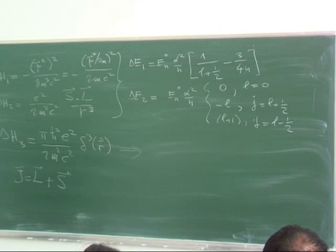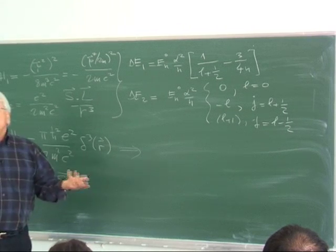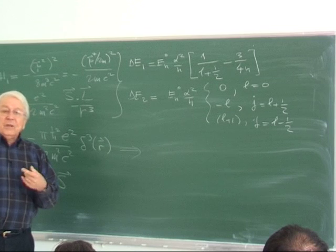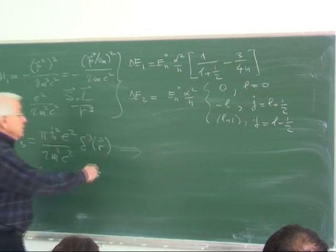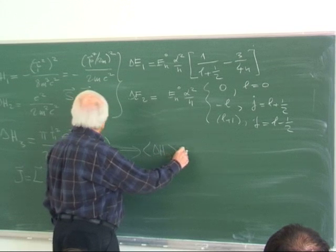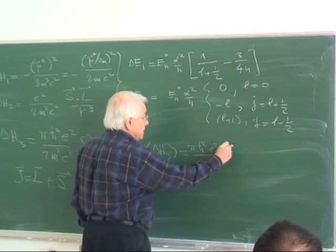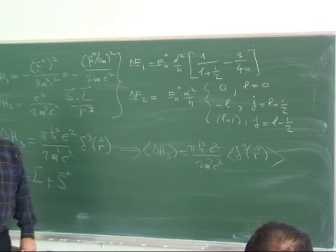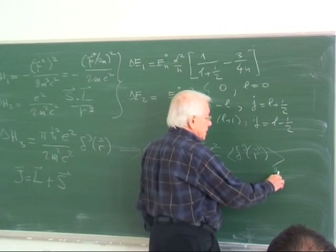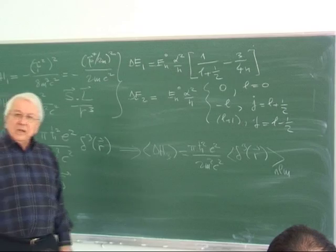So delta H3 expectation value is pi*h-bar²*e² divided by 2m²c², times the expectation value of the delta function delta³(r), evaluated in the NLM basis. The presence of the delta function forces r = 0, and what you get is |ψ(0)|². So delta H3 equals pi*h-bar²*e² divided by 2m²c² times |ψ(0)|².